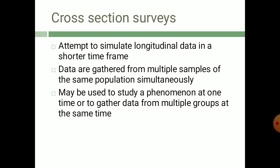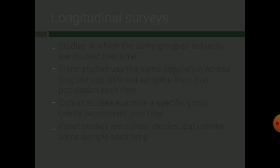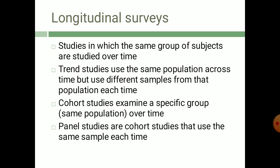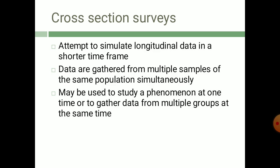Contrary to longitudinal surveys, cross-sectional surveys attempt to simulate longitudinal data in a shorter time frame, with data gathered from multiple samples of the same population simultaneously. The key difference between longitudinal and cross-sectional surveys lies in the time used. Longitudinal surveys use a sequence of time periods — one month, three months, one year, or multiple years — while cross-sectional surveys examine subjects only once or a few times.